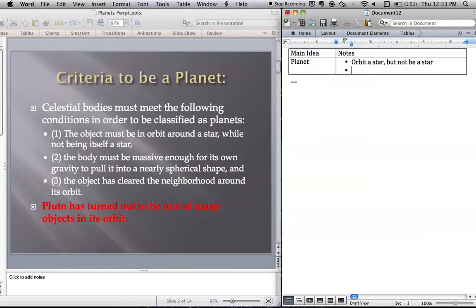It has to be large enough for its own gravity to pull it into a round shape. So when objects get really huge their gravity that pulls them together is able to pull them into a round shape rather than a funky maybe like potato shape.